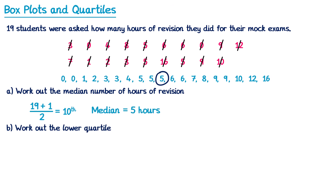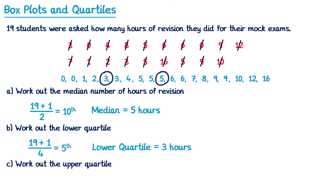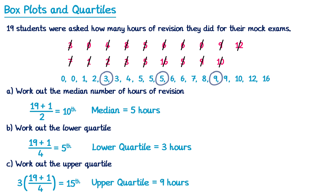Next we're going to work out the lower quartile. This time I do 19 plus 1 but divide by 4 instead. 19 plus 1 is 20, divide by 4 is 5. So I'm after the fifth value. If you count along five values from the left-hand side you end up at 3. So the lower quartile is 3 hours. And now we'll do the upper quartile. For this one we do 3 lots of 19 plus 1 over 4. We did 19 plus 1 over 4 in the previous part — that was 5. So we multiply this by 3 to get 15. So we want the fifteenth number. Counting along, the fifteenth number is 9. So the answer to the upper quartile is 9 hours.